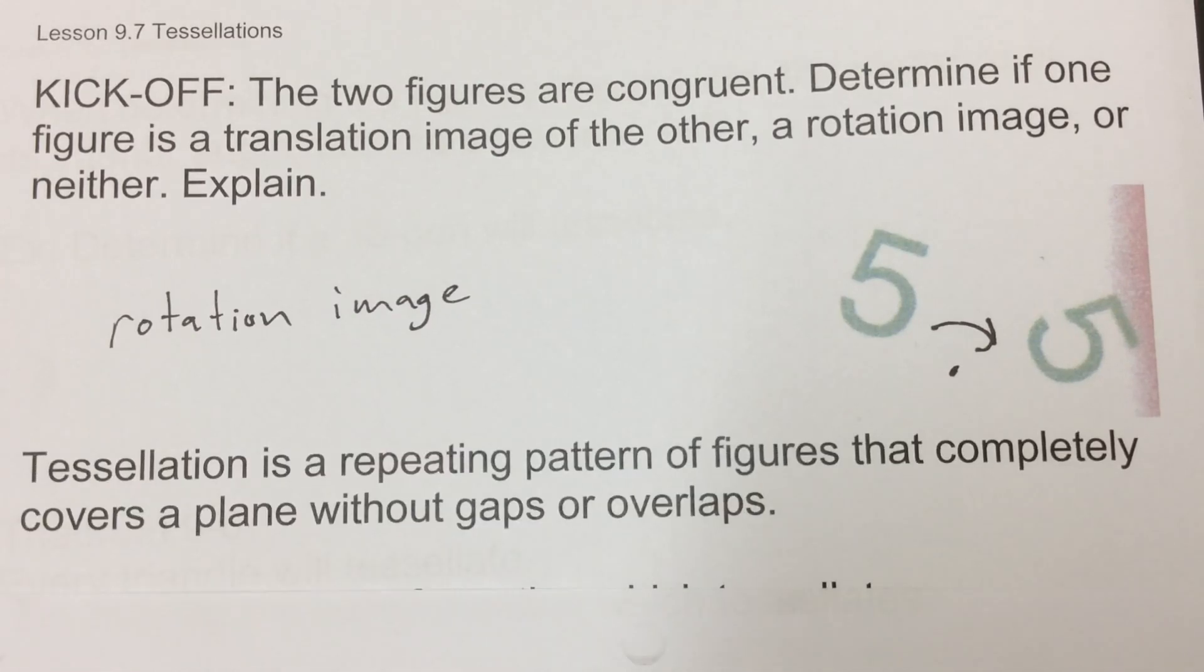This last part of transformations is we're going to deal with tessellation. A tessellation is a repeating pattern of figures that completely covers a plane without any gaps or overlaps. This could be any real figure as long as it fits together and won't leave a gap or an overlap.